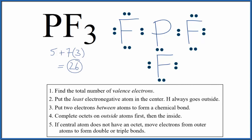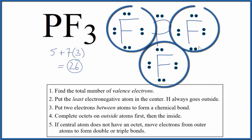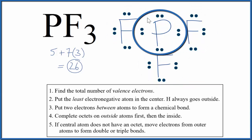So we'll put the last two, those will go on the inside atom, on the phosphorus. And at this point each element here, each fluorine has an octet, the phosphorus in the center, that has an octet.